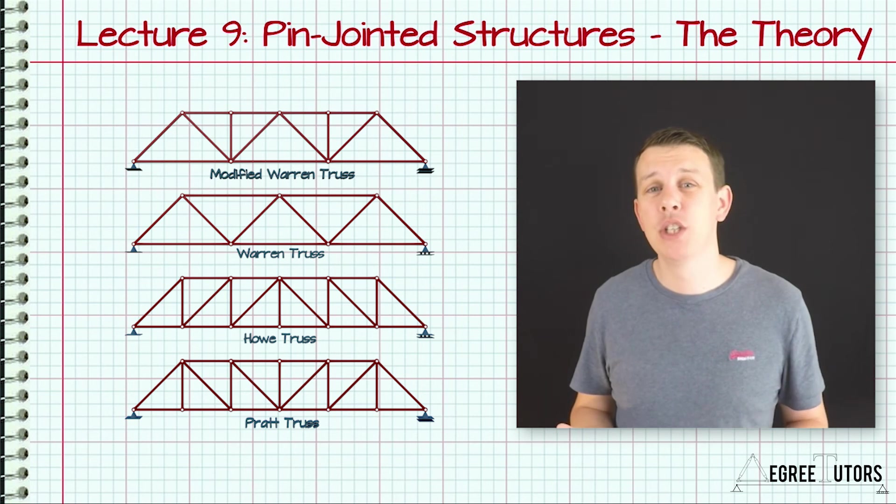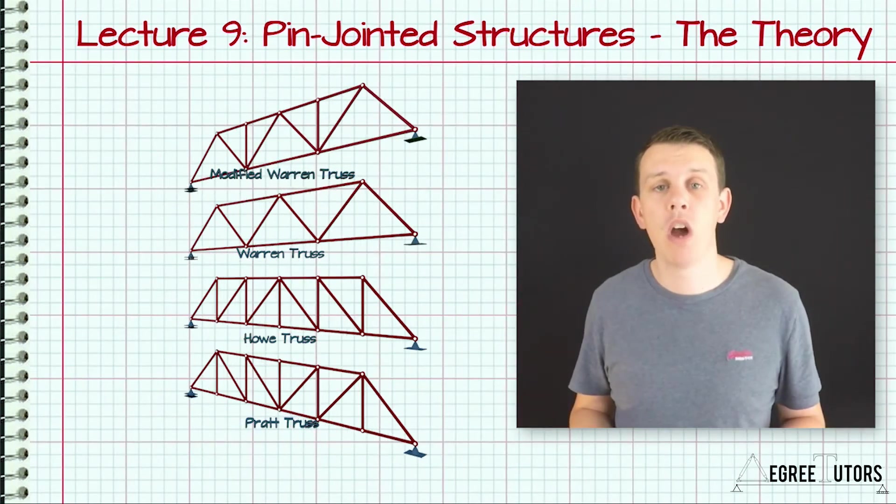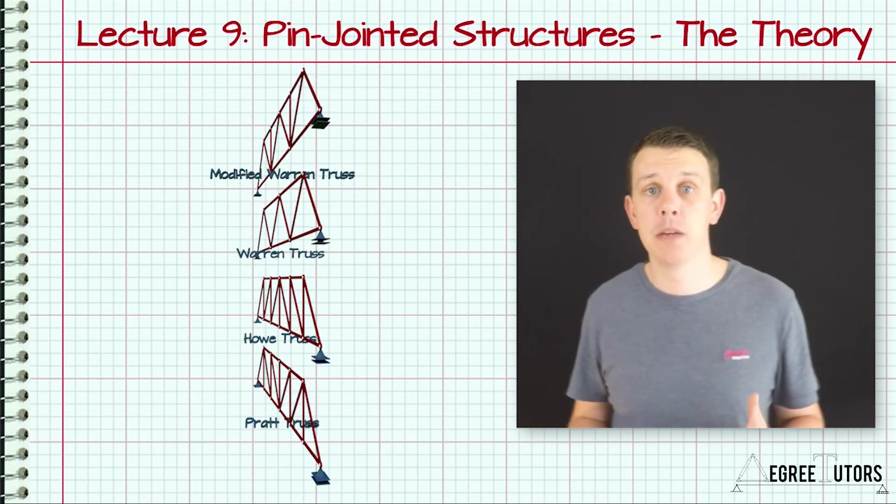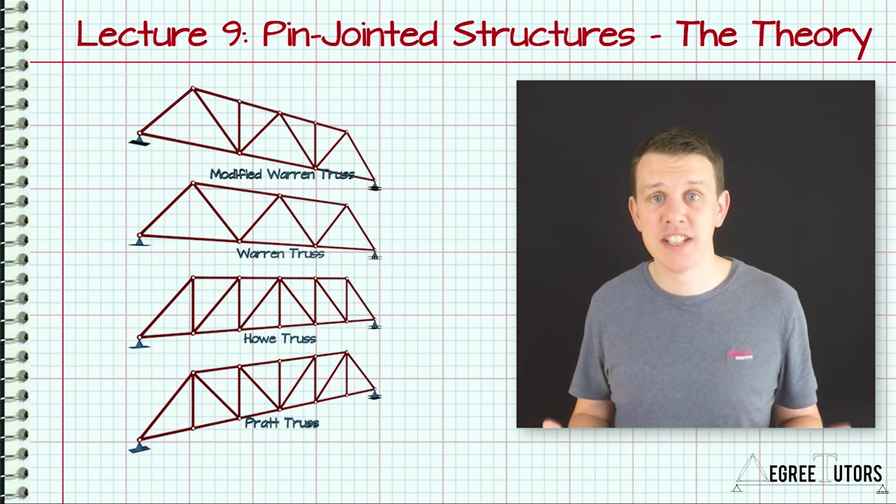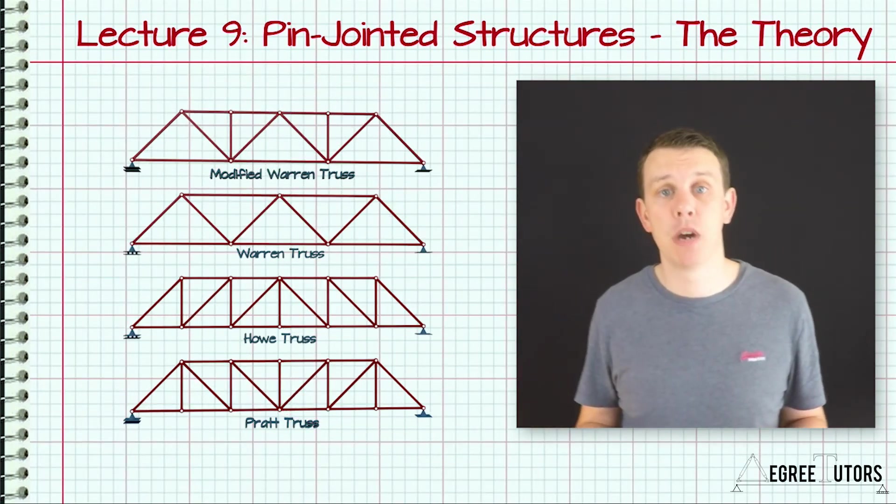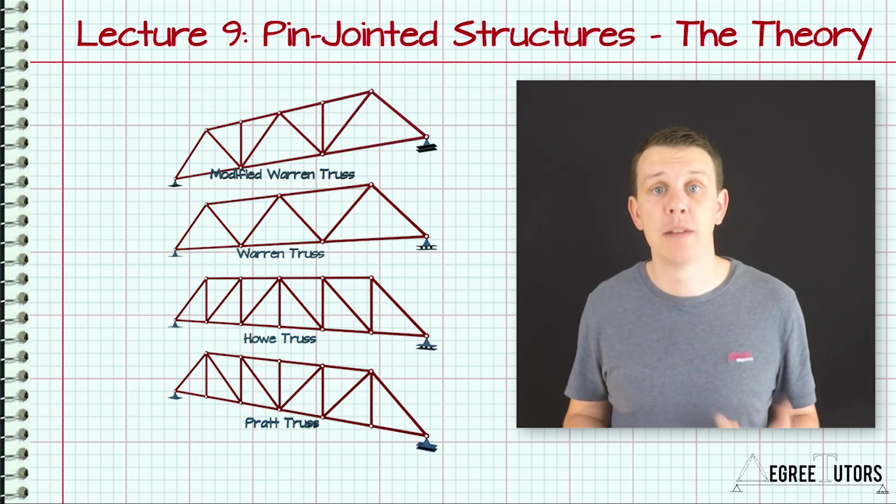There's a range of commonly used truss configurations. The Warren, Pratt, and Howe trusses are probably among the most popular. Their ability to span large distances efficiently make them especially popular for large spanning roof and bridge structures.